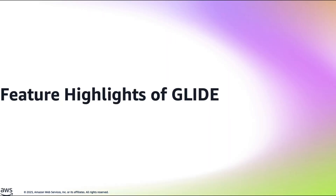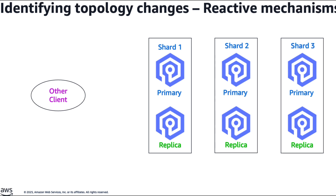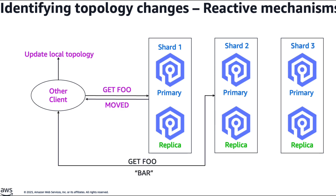Here we will discuss the feature highlights of Glide and how it solves customer problems. In order to route requests correctly, the client maintains a map linking slots to their respective owning nodes, referred to as the cluster's topology. When a request is executed, only if an error is encountered does the client refresh the topology, and the request is rerouted to the right node. The problem with this reactive approach is that it increases latency, as the request has to be routed twice, doubling the response time.